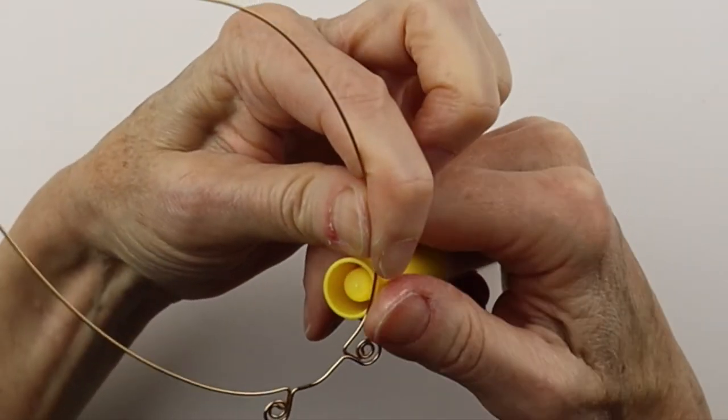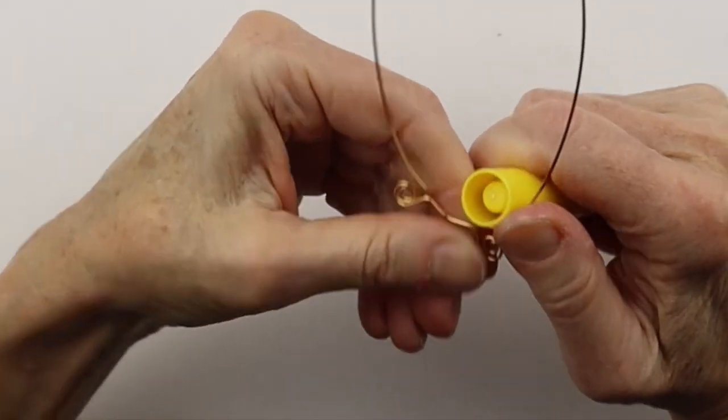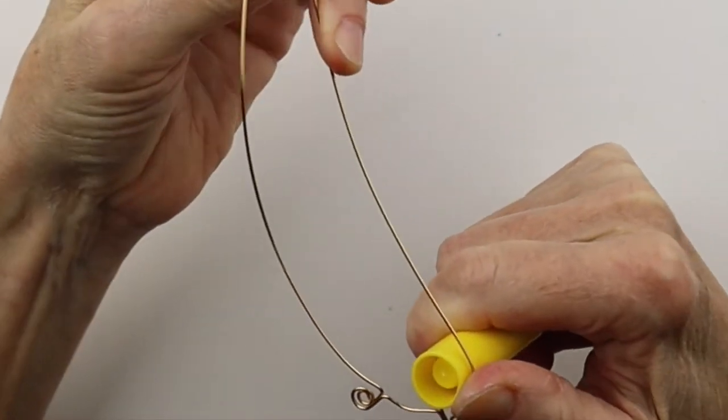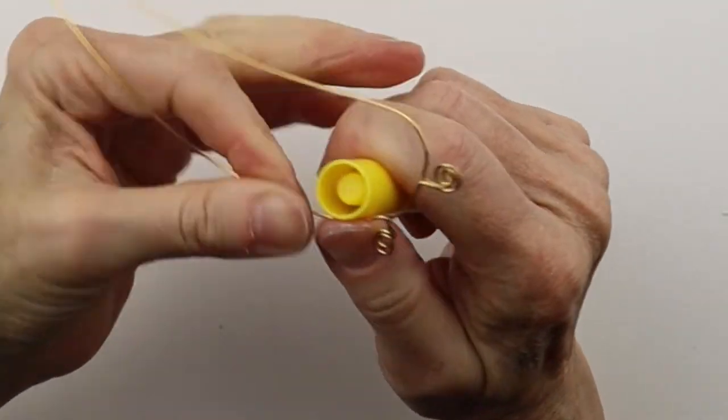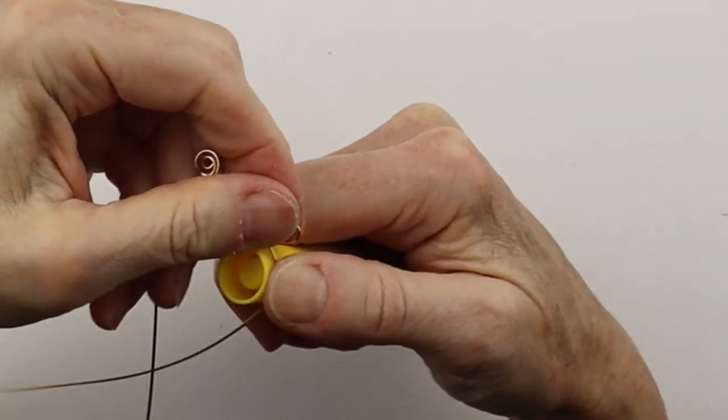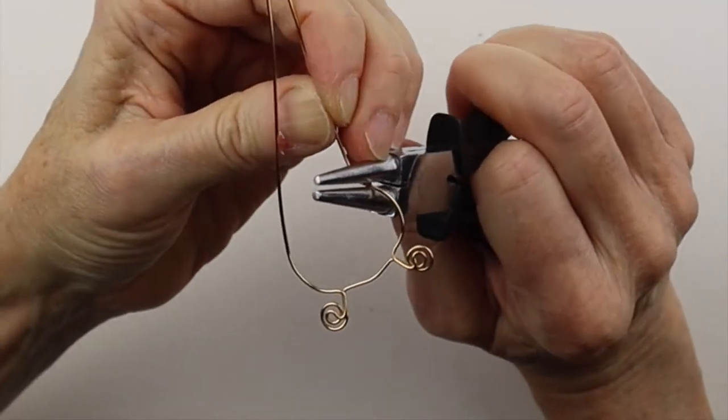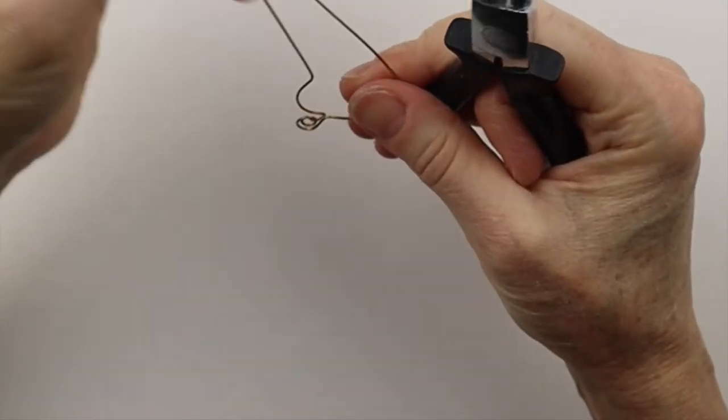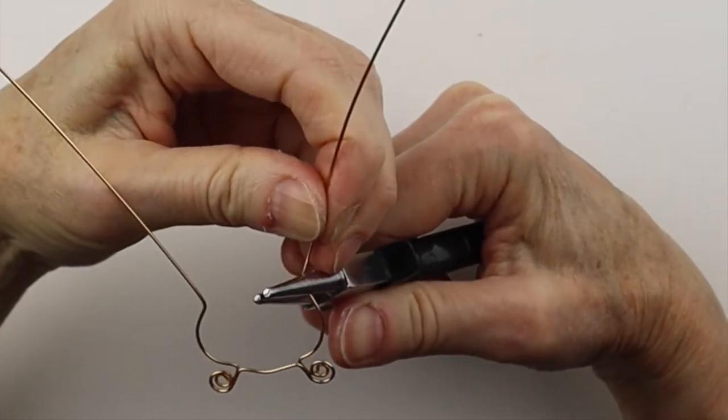So from here we can curve it out again with the marker. This one too, bring it around. And then we can just bend this out a little bit, same on this side. Bend it out.